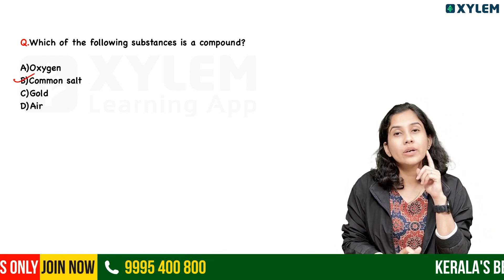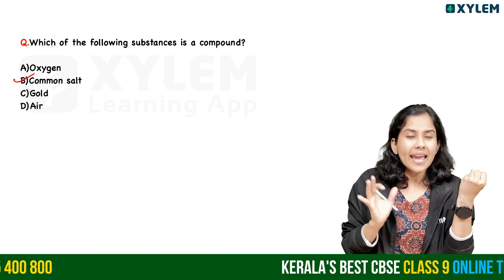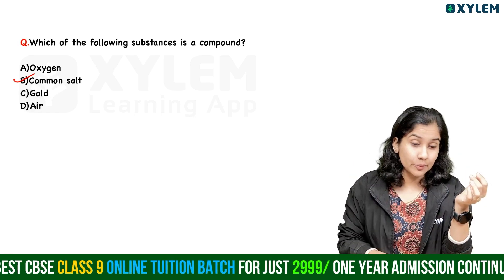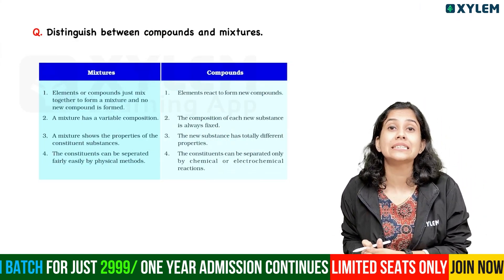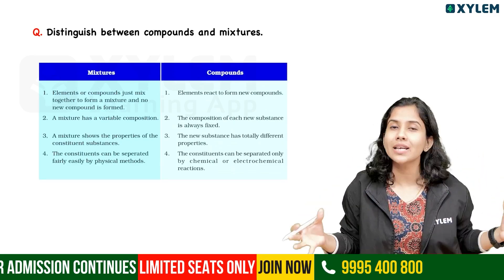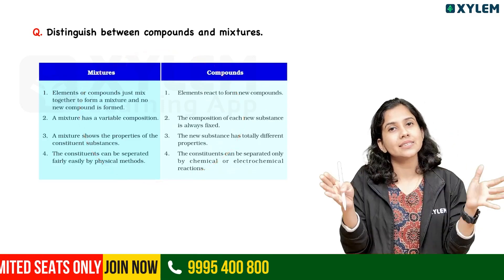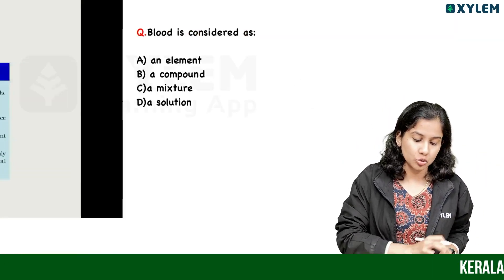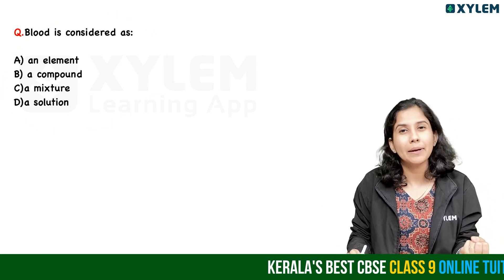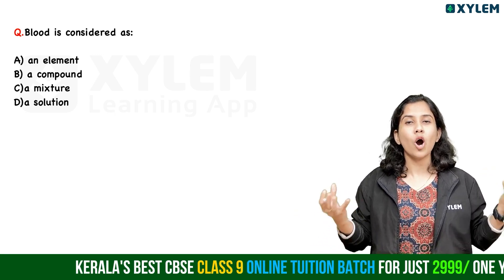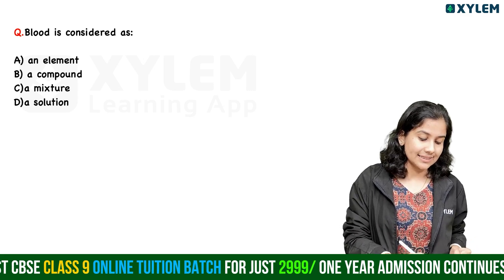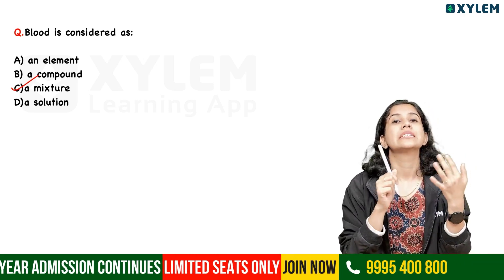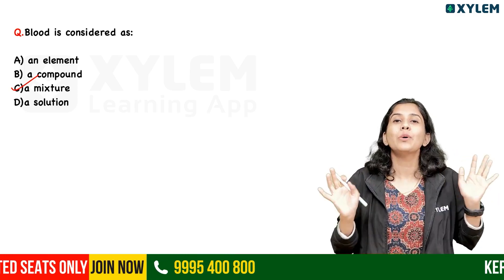The first question asks: is wood an element, compound, mixture, or solution? Wood is a mixture. The next question: which of the following substances is a compound? Oxygen is an element, common salt (sodium chloride) is a compound because it is in a fixed ratio, chlorine is also an element, and gold is an element. Air is a mixture. Blood is also a mixture - it contains platelets, RBCs, WBCs, water, and plasma - everything is in the blood, so it is a mixture.